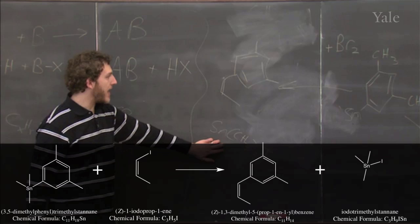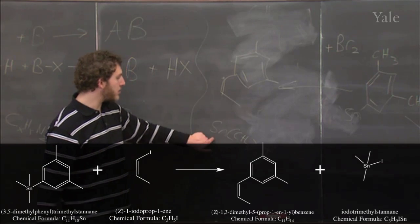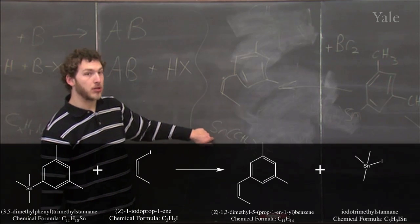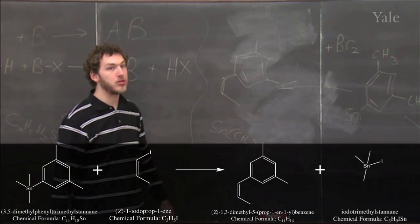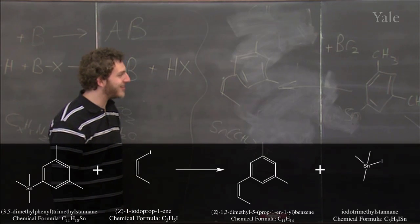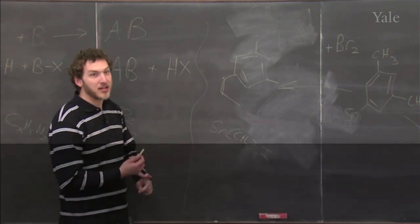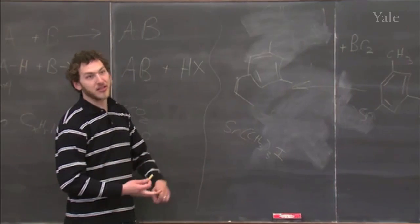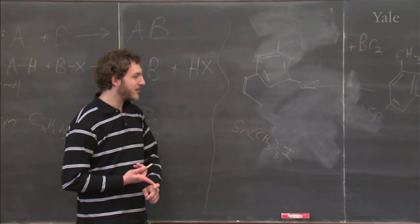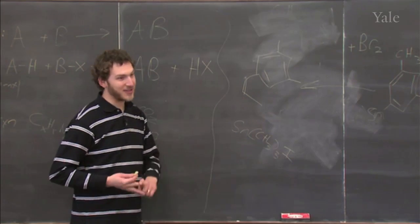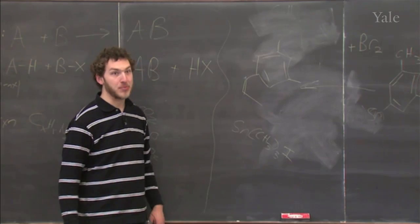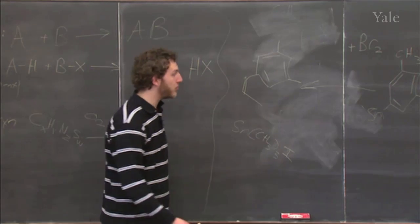Now you can do this reaction using, because tin is so toxic, people have changed over. You can use zinc, or boron, or silicon, or magnesium. It's basically all these different types of coupling reactions, coupling reagents.